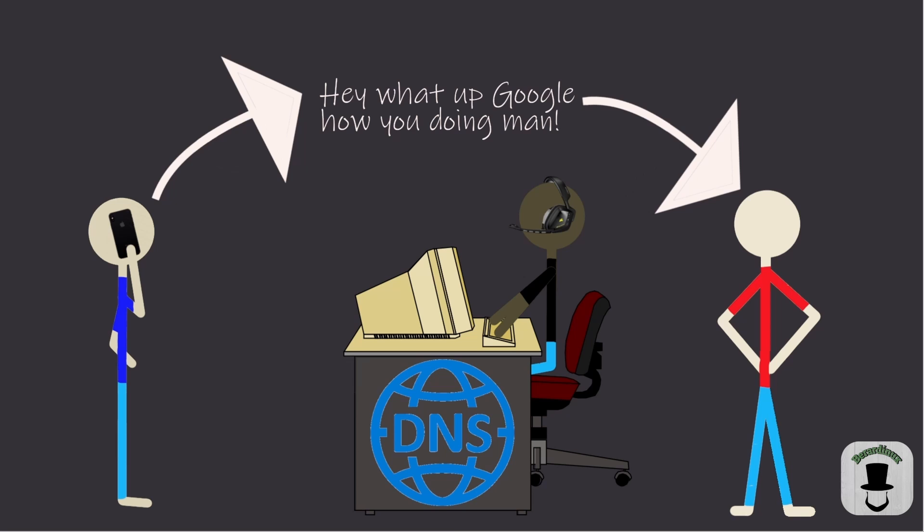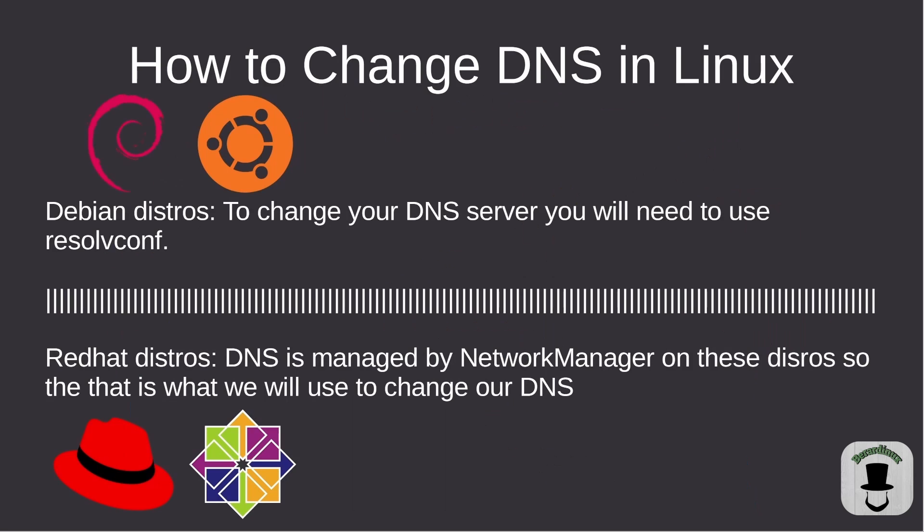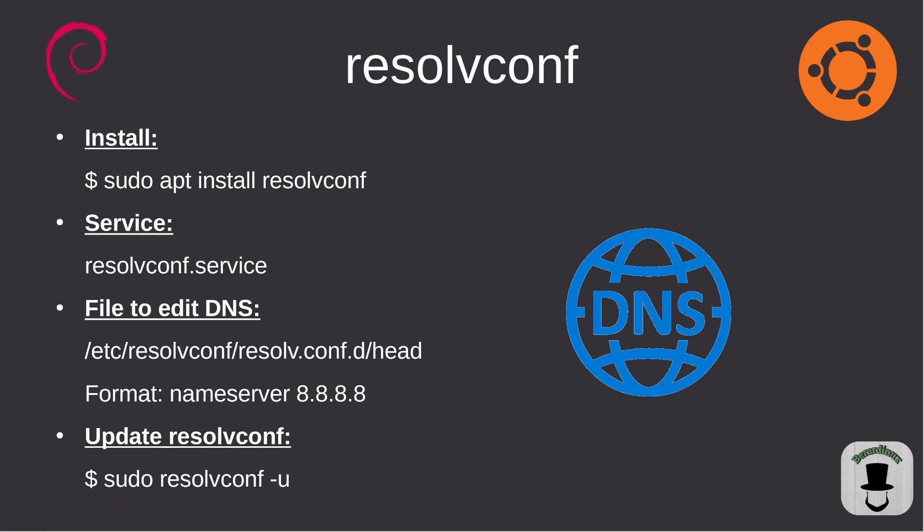We're going to change our actual domain name service for our Linux box. There are two different ways of doing this. There's going to be a different way for Ubuntu and Debian distributions, which is going to be using resolveconf. There are other ways of doing this but that's the easiest way I've found on Debian distributions. For Red Hat, you're going to actually be able to do it the old way, just using Network Manager to update your domain name service. I'm going to show you how to actually do both inside of the terminal today.